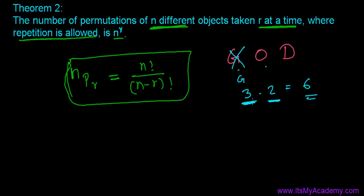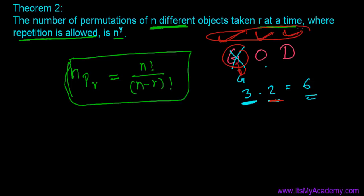But what if repetition is allowed? In the first position I can select G, O, or D — three options. Now, since repetition is allowed, if I write G in the first position, I can write G again in the second position. So O and D are also still available, giving three options for the second position as well.